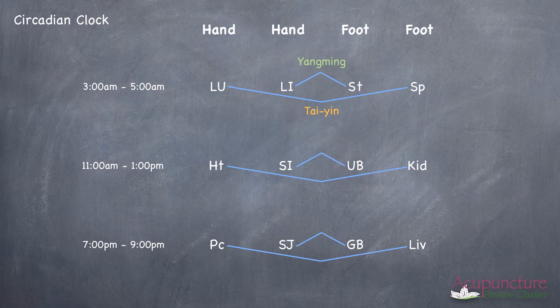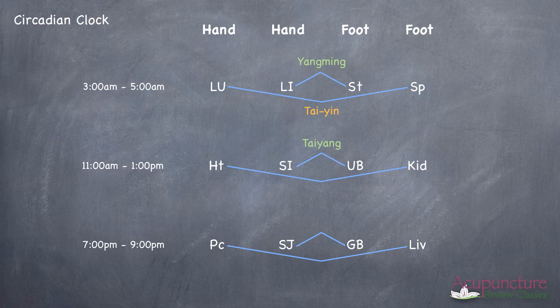Let's look at the SI and the UB. You want to put above it Tai Yang. You now know that the SI is hand Tai Yang and the UB is foot Tai Yang. Underneath the heart and the kidney line, you want to put Shao Yin. You have the heart which is hand Shao Yin and you have the kidney that's foot Shao Yin.